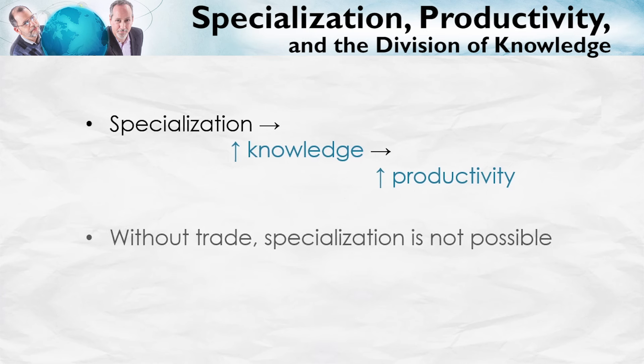Without trade, specialization isn't possible. I couldn't specialize in being an economist if I didn't know that I could sell the services of being an economist — being a teacher of economics — and in return for my salary, buy food, clothing, and shoes. Again, it's trade which allows this specialization to proceed.